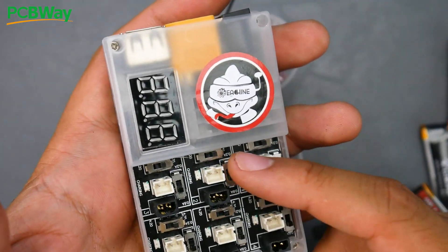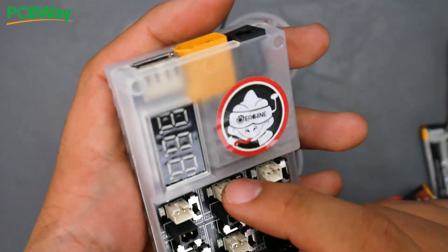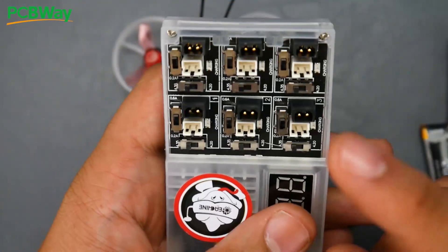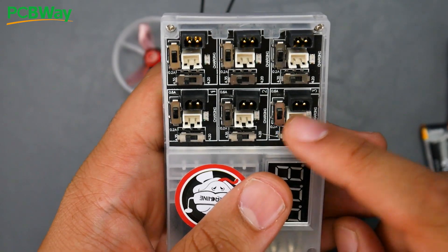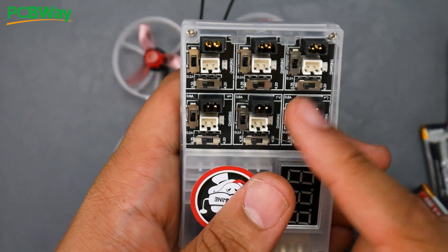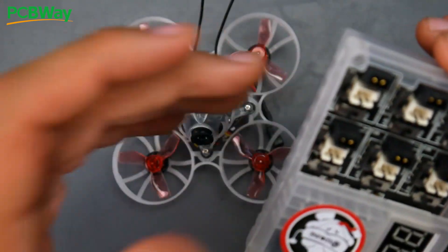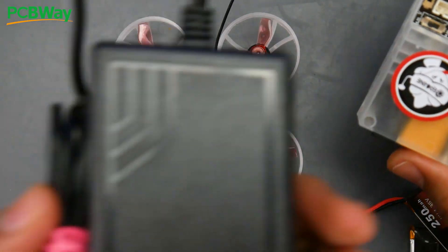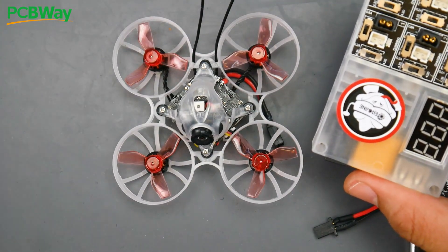The charger takes both types of connectors, so you have your new one here and your older one. It charges normal lipos as well as HVs, and you could select between 200 milliamps to half an amp. I always have them on half an amp so it charges much quicker. And again, they provide the power brick which is just absolutely beautiful.